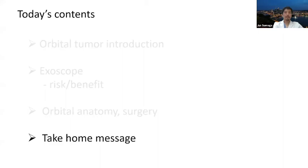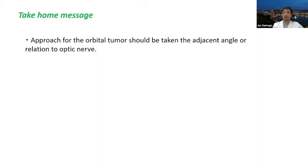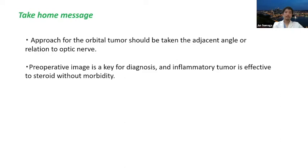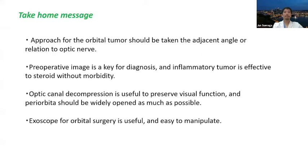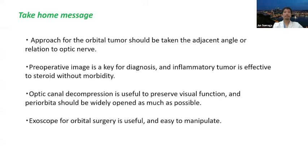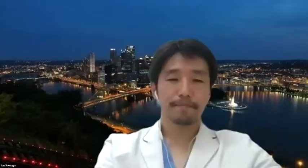Final take-home messages: The approach for orbital tumor should be chosen based on the adjacent angle and relation to the optic nerve. A preoperative image is key for diagnosis. Inflammatory tumors respond to steroid without morbidity. Optic canal decompression is useful to preserve visual function. The periorbita should be widely opened as much as possible. The exoscope for orbital surgery is useful and easy to manipulate. The orbital apex and the area inferior to the optic nerve has a high risk to visual function. Thank you for your attention.